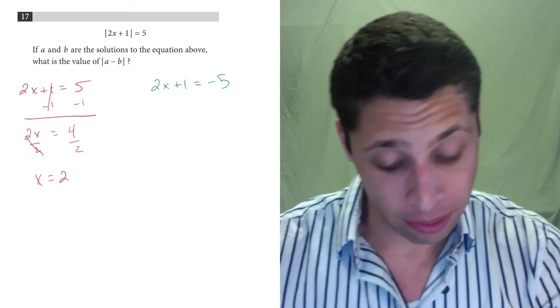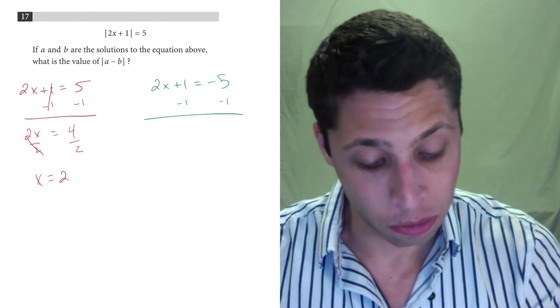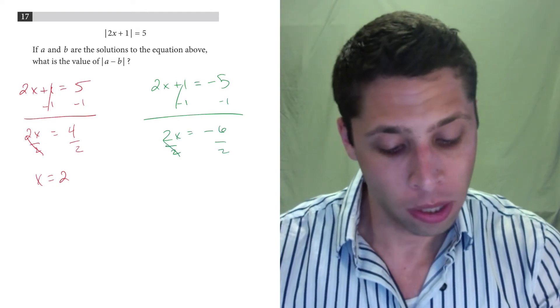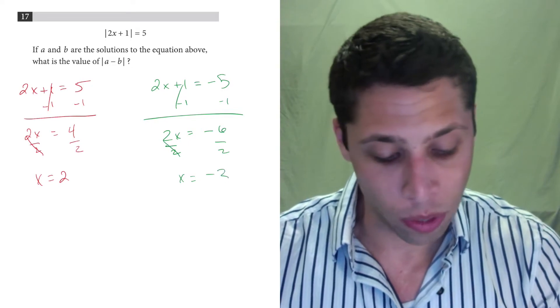And then, same thing with the green, doesn't really change much here. We're subtracting 1, 2x is equal to negative 6, divide by 2, and we get x is equal to negative 3.